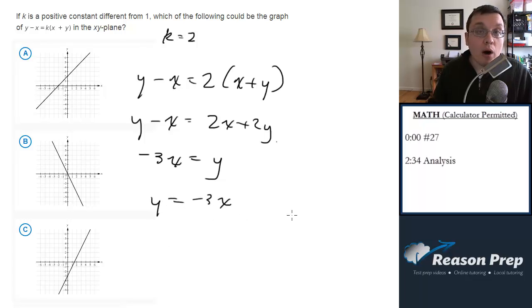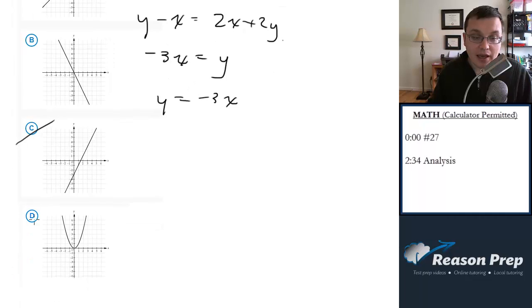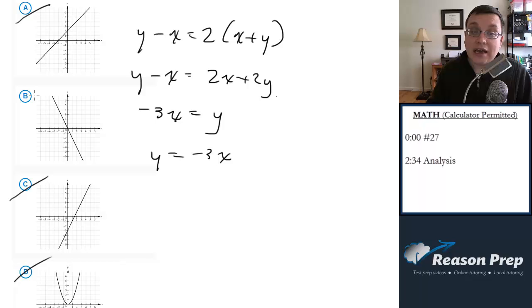So what does this mean? We've got no y-intercept, so we must go through the origin. So right away, a is gone, and c is gone, and d is not even a line, so we can get rid of d. And we're going to have a negative slope, so that looks good for choice b. And choice b is the answer.